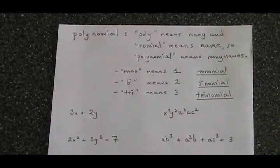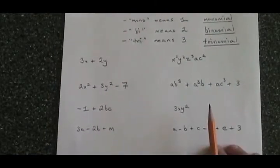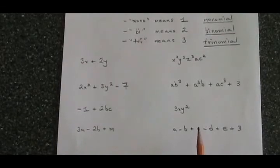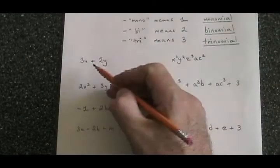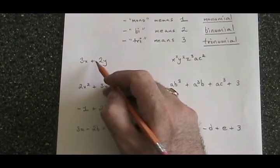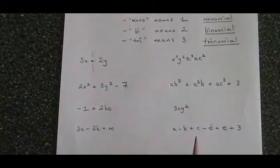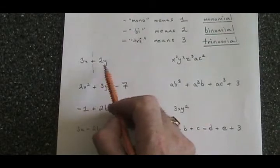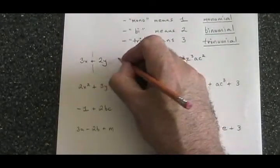Let's identify the names of these polynomial expressions. 3x plus 2y. How do we know how many terms are there? Well, one trick is to see any plus sign or minus sign as a wall that divides the polynomial into parts. The wall from our plus sign divides this polynomial into two terms. Two terms means it is a binomial.